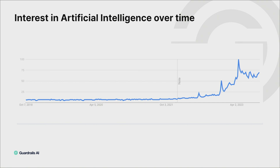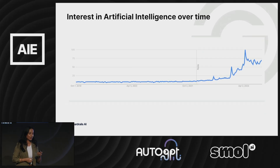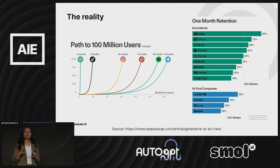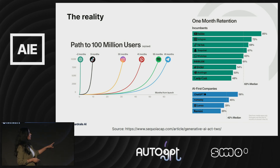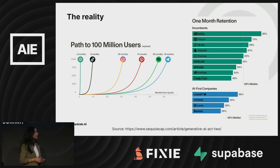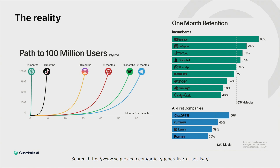This is a relevant graph — basically search interest for artificial intelligence over time. You can really see that peak around where ChatGPT came out. But if you think about where a lot of the reality is, or where a lot of the value lies today, even though generative AI applications have seen the fastest adoption compared to a lot of other consumer applications, their retention right now tends to be lower. These are some graphs I borrowed from a really fantastic article by Sequoia. You can really see that retention for AI-first companies versus the one-month retention for non-AI-first traditional software companies.